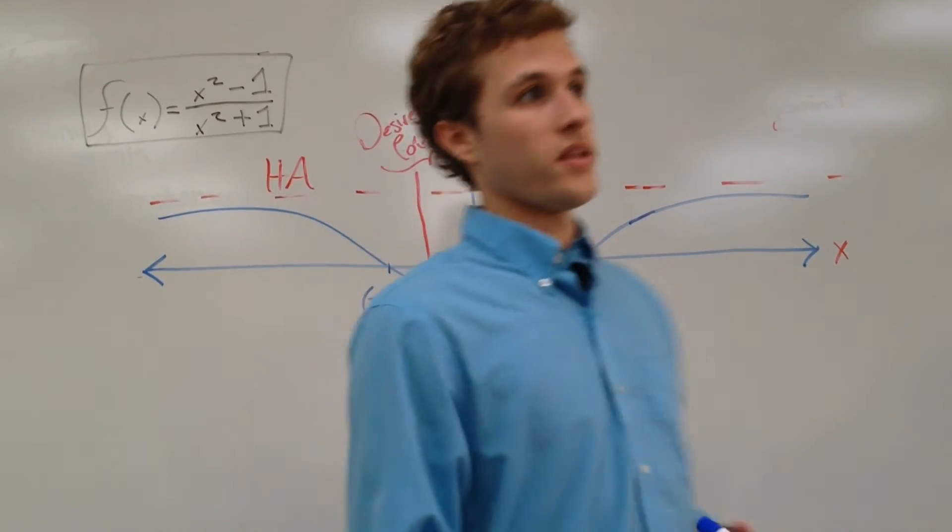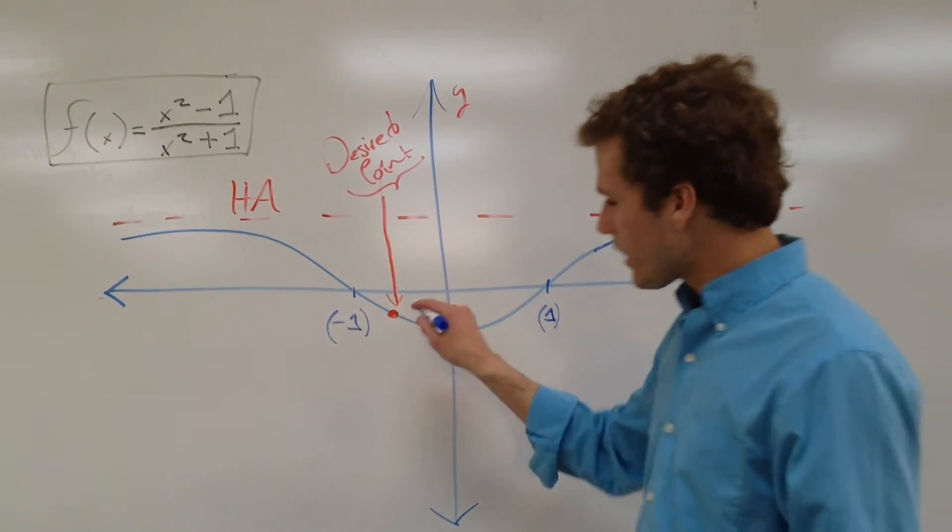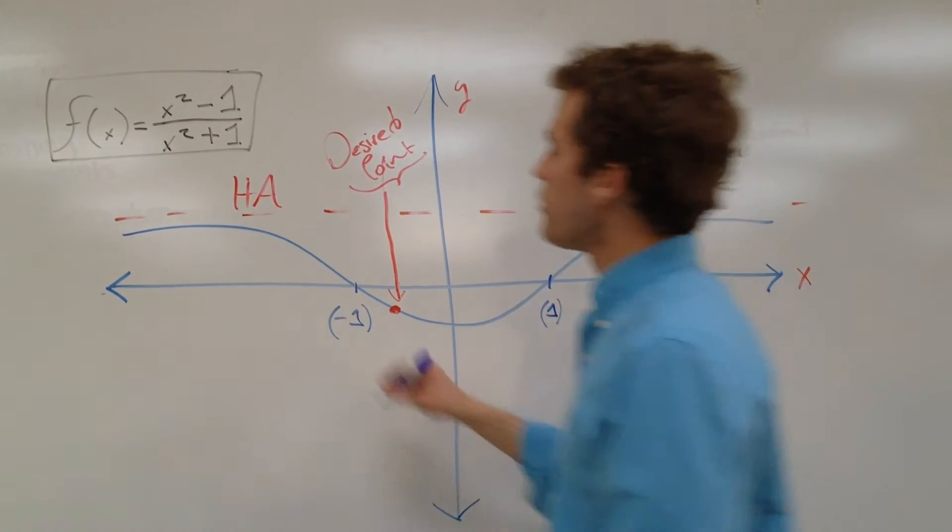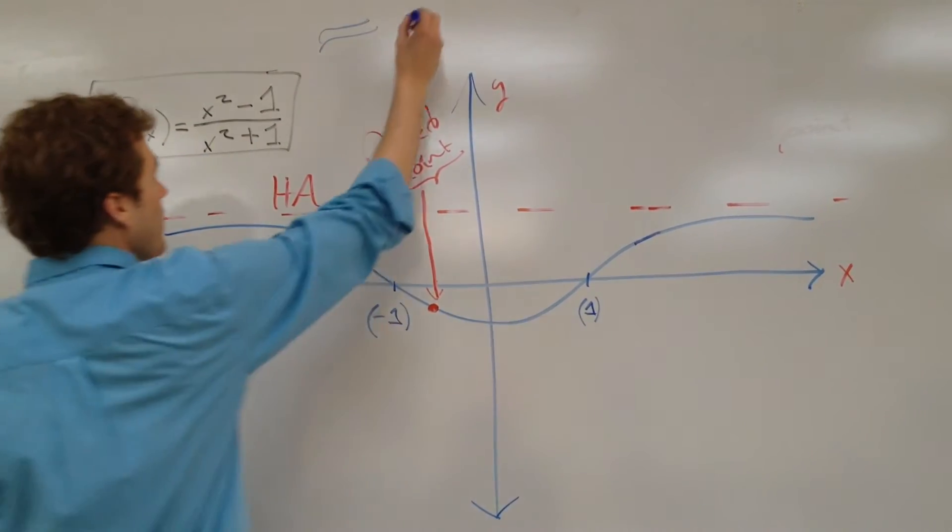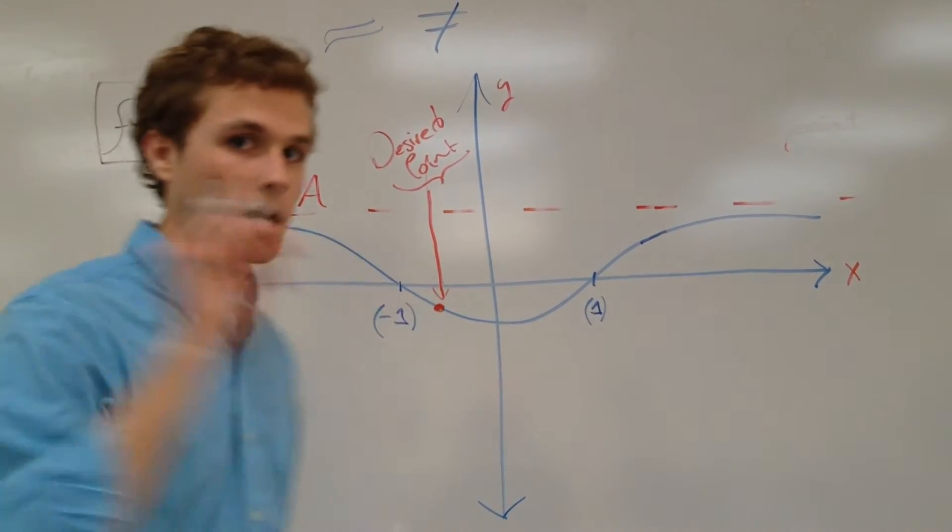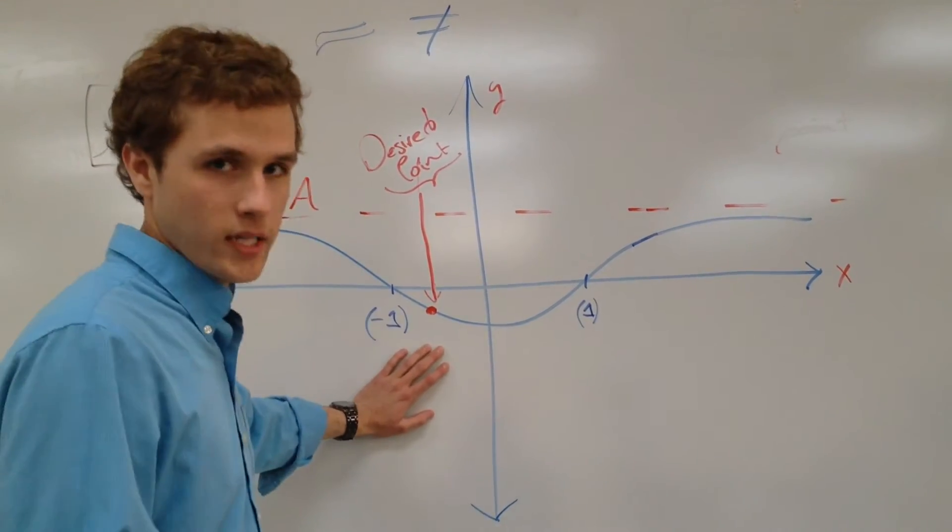Now, a note on Newton's method: while we can get really close to this point, Newton's method is always just an approximation. It is not equal, it's just really close to being equal to the point that we're trying to get at.